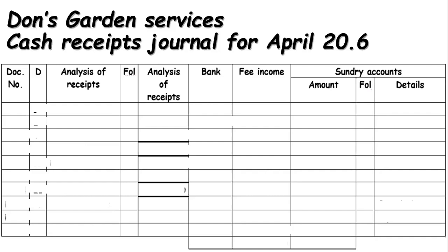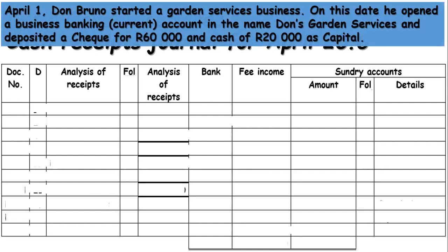Let's look at transaction number one — you find this on page 52 where the example started. On this particular day he started the business, opened an account, and deposited a total amount of 80,000 rand made up from a cheque and a cash deposit. So he was given receipt number one. The date is the 1st of April, the money came from Don Bruno. The amount was directly deposited into the account — not cash handled at premises — so it goes straight to bank at 80,000 rand. Since it's capital, not core business income, we go to sundry accounts and write 'capital'.